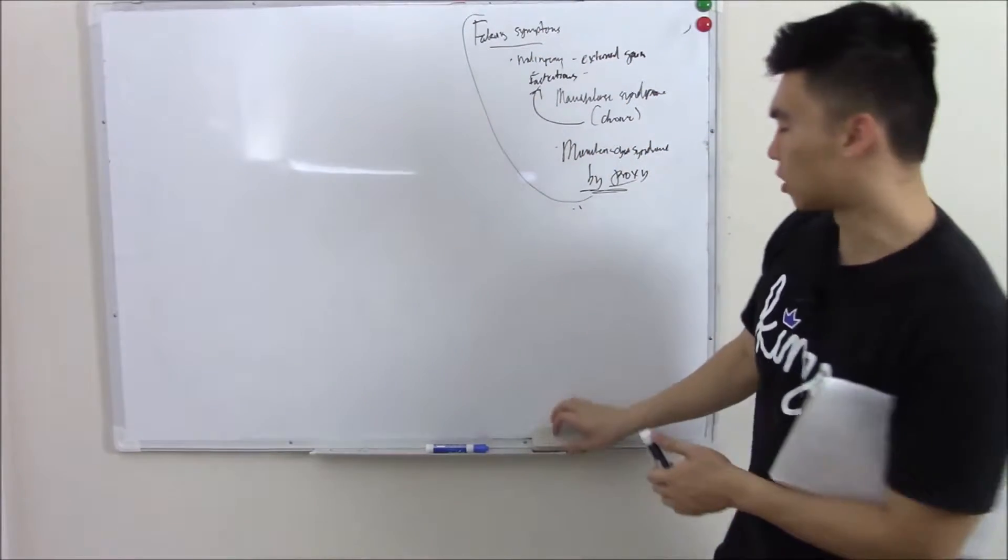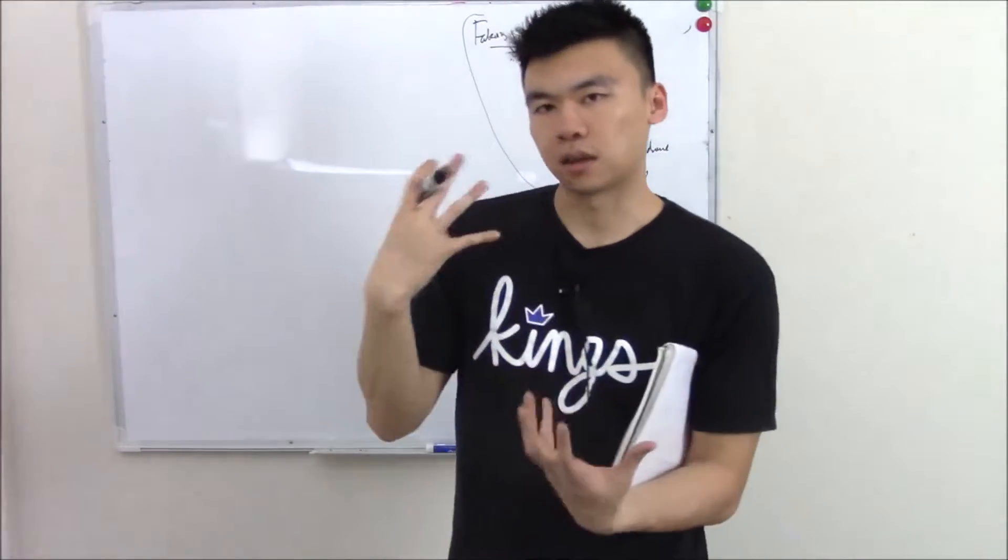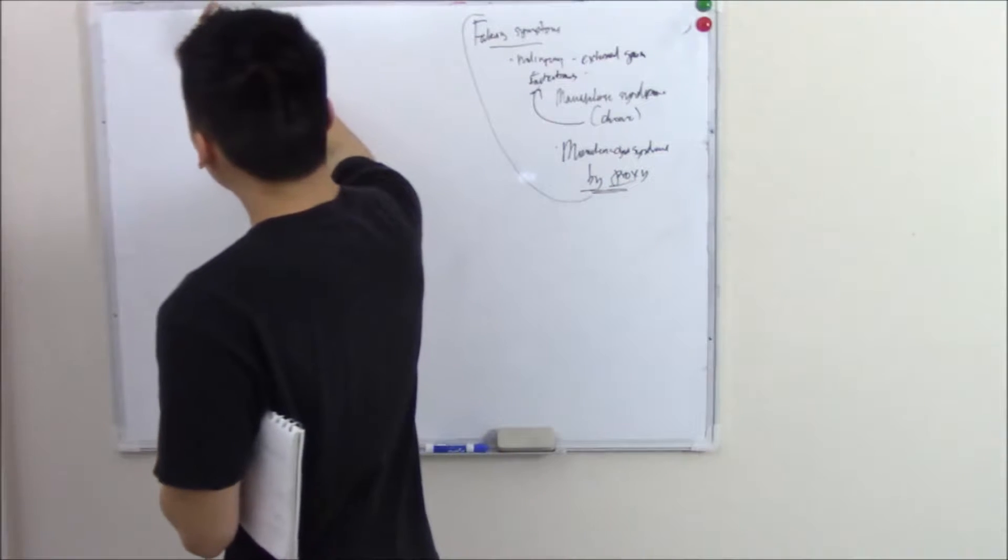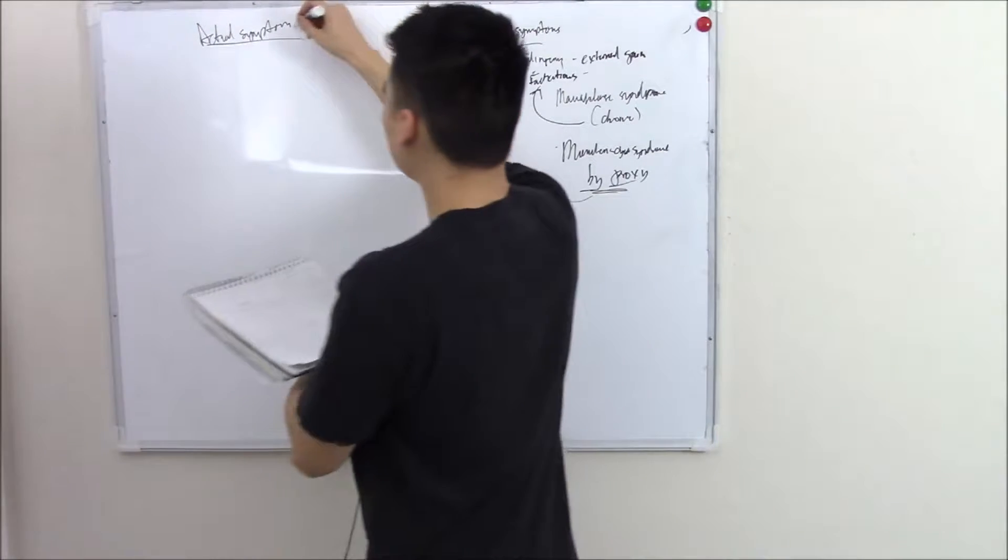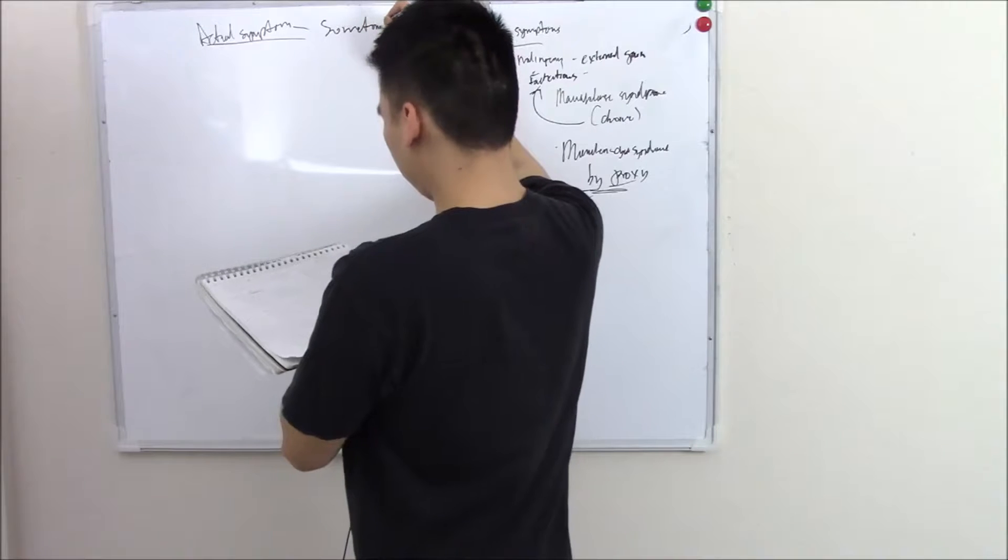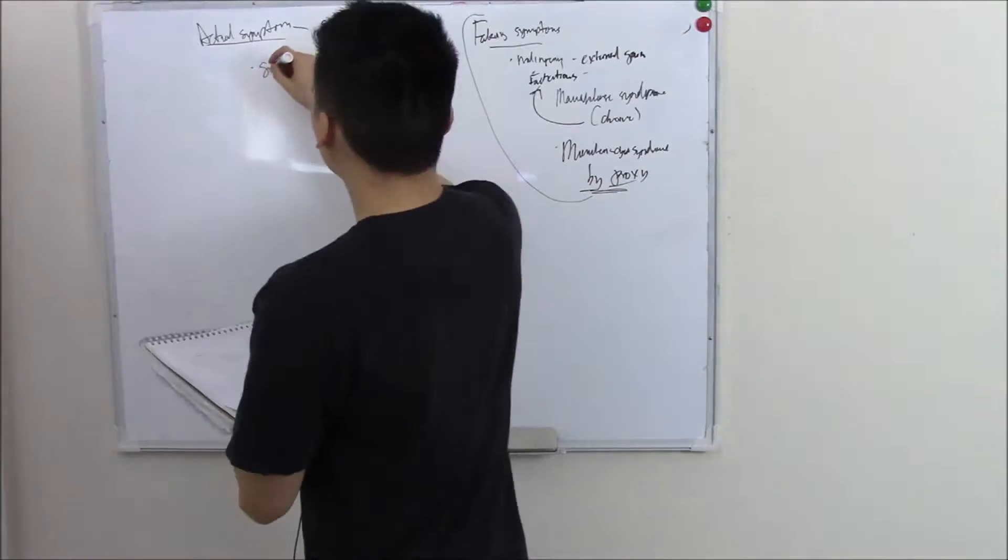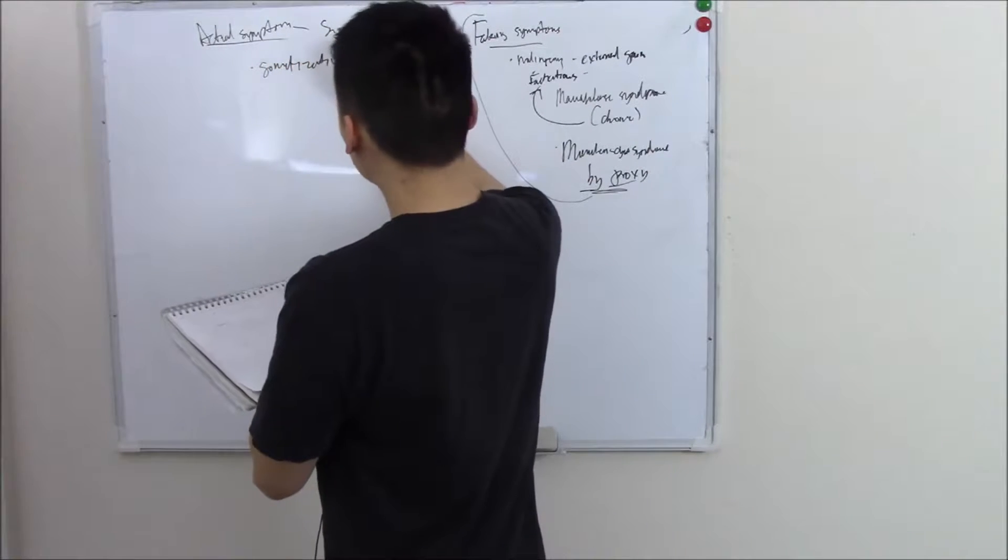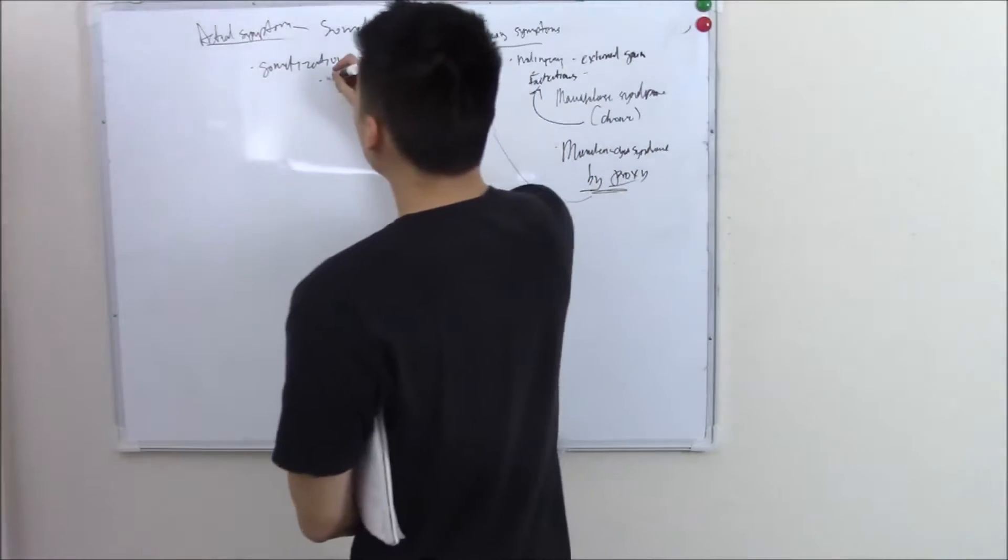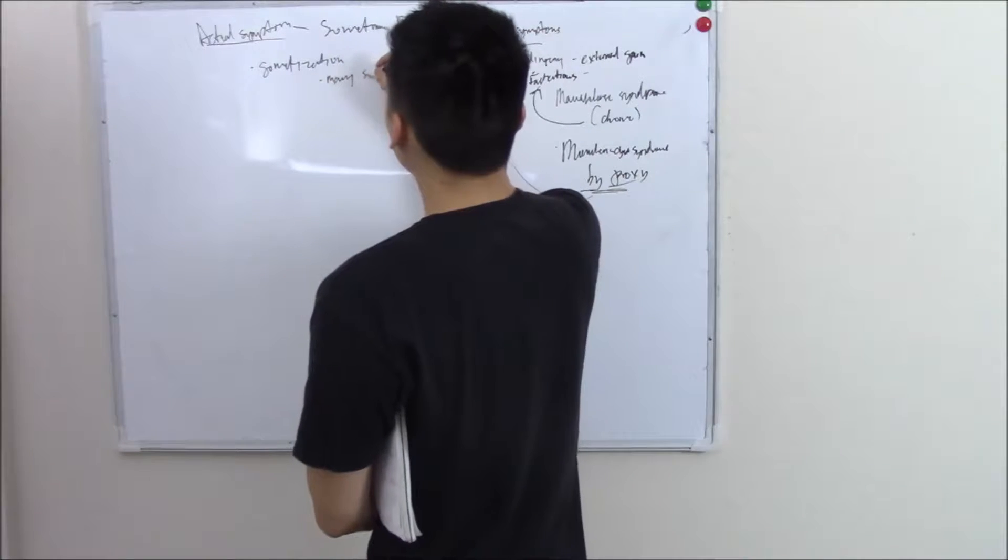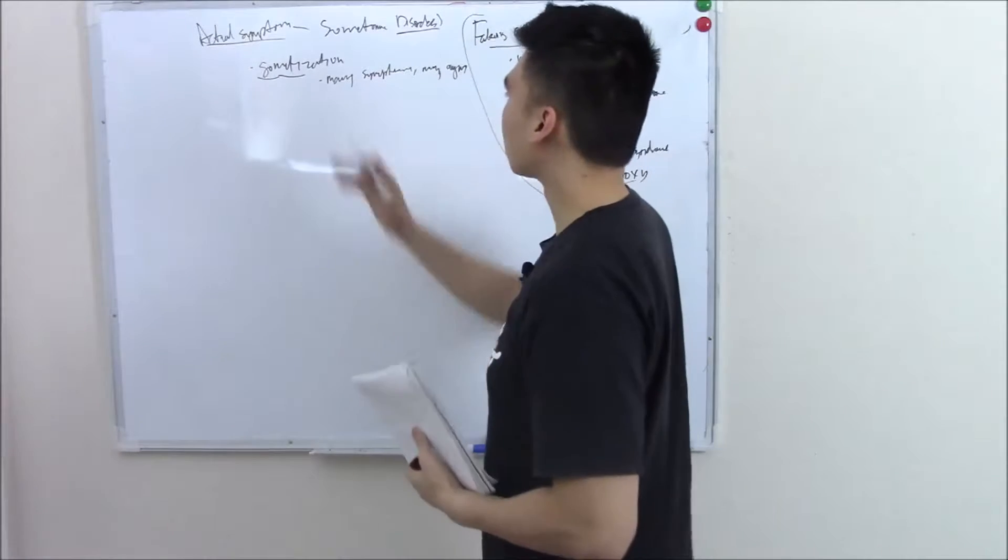Now that's faking symptoms. You can also have actual symptoms, not from physiological or organic causes, from psychological causes. So I'll just write actual symptoms, but this group is formally called somatoform disorders. You can have something called somatization. Somatization is when you have symptoms, but it spans multiple systems, multiple organs. So many symptoms, many organs.